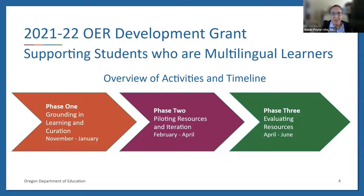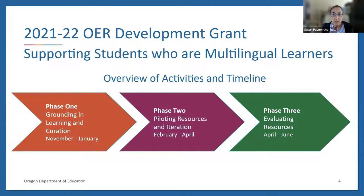The OER development grant took place between November and June of last school year, and we had 32 grantees working on the development of lessons designed with intentional supports for students who are multilingual learners. There were three phases to the work. Phase one was intensive in terms of professional learning, which was focused on pedagogical supports and also covered the basics of OER and open licensing. In phase two, we supported grantees through the process of piloting and revising their newly developed lessons. And in phase three, grantees engaged in a peer evaluation process using our OER quality framework, with final evaluations being conducted by ODE staff and our professional learning providers.